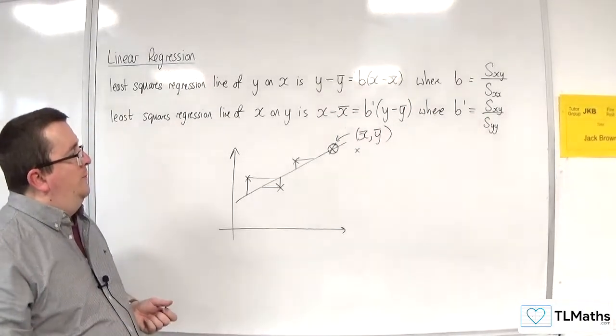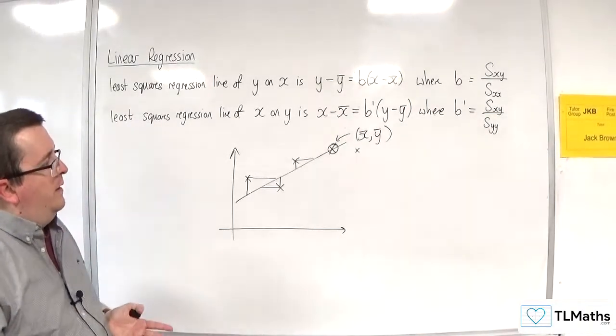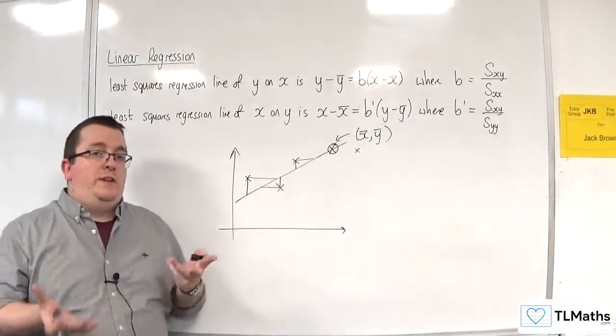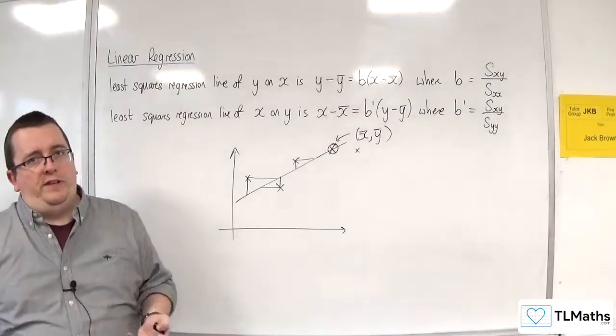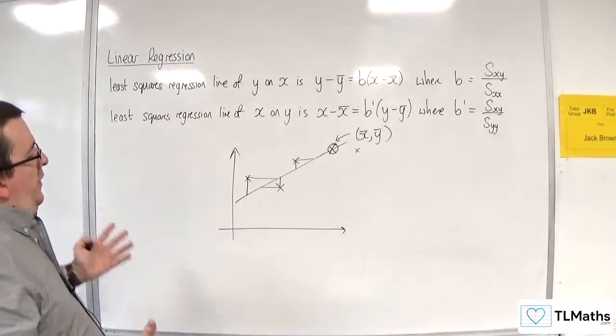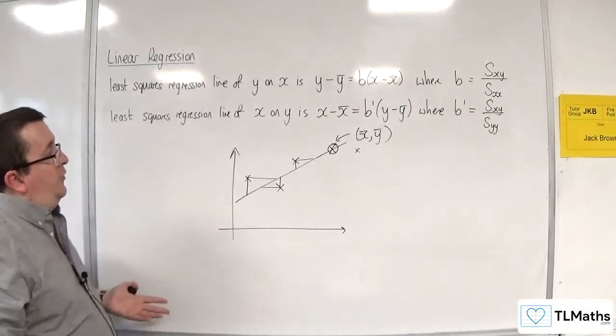Not all regression lines are going to be that. So the issue is that minimising the vertical distances will get you a different result than minimising the horizontal distances in the general case. That's the consequence you get.